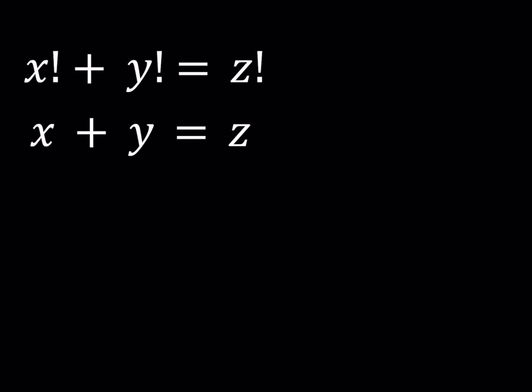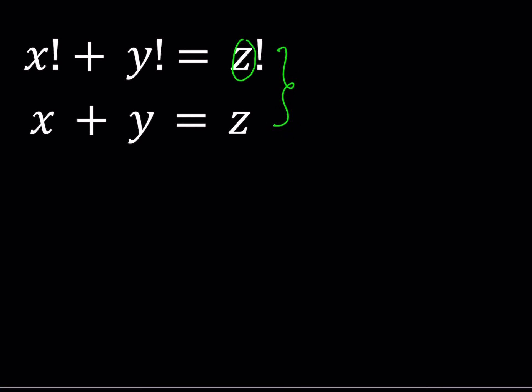So what do we do? Since we're given the system, we can just go ahead and replace z with x plus y in the first equation. That gives us x factorial plus y factorial equals x plus y factorial. So basically, after finding the values of x and y, we can just add them and find the values of z.